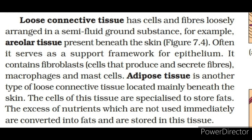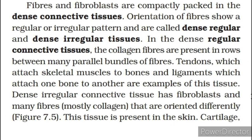Adipose tissue is another type of loose connective tissue located mainly beneath the skin. The cells of this tissue are specialized to store fats; excess nutrients not used immediately are converted into fats and stored here. In dense connective tissues, fibers and fibroblasts are compactly packed. The orientation of fibers shows regular or irregular patterns, giving rise to dense regular and dense irregular tissues. In dense regular connective tissue, collagen fibers are present in rows between many parallel bundles of fibers. Dense irregular connective tissue has fibroblasts and many collagen fibers oriented differently, and is present in the skin.